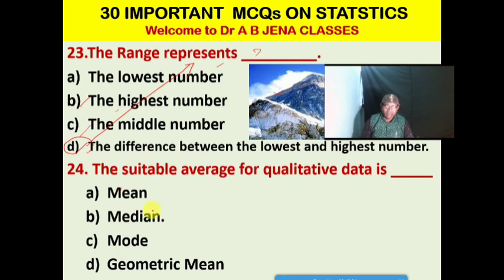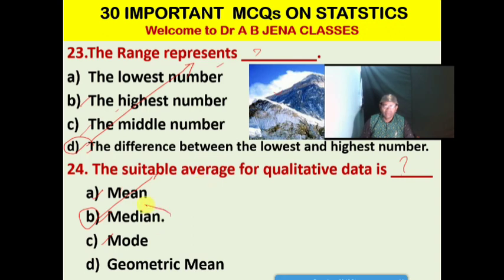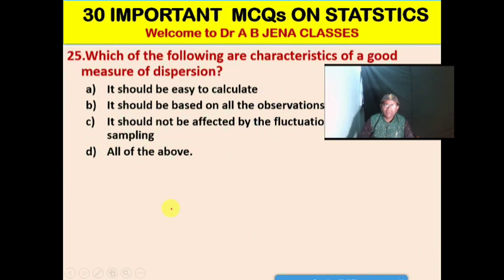Next MCQ: The suitable average for qualitative data is what? A. Mean. B. Median. C. Mode. D. Geometric mean. B is the right option. The suitable average for qualitative data is median.